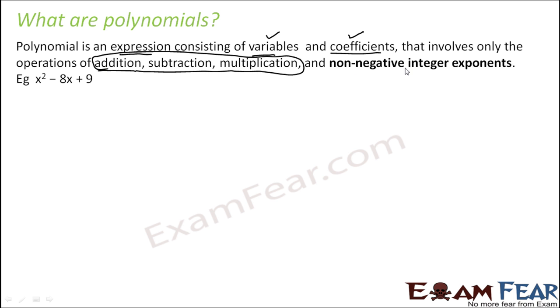And it has non-negative integer exponents. So when I say non-negative integer exponents, I mean something like this. For example, x square - 2 is a non-negative integer exponent. Non-negative integer, I can also say as whole number. So exponents are whole number.